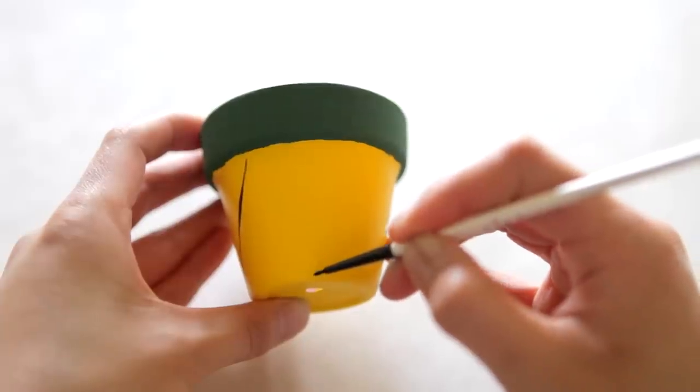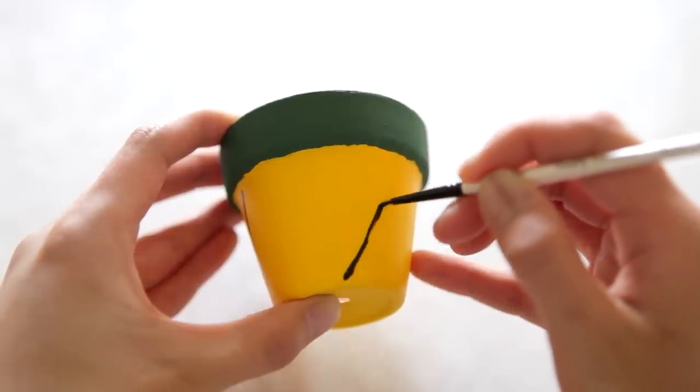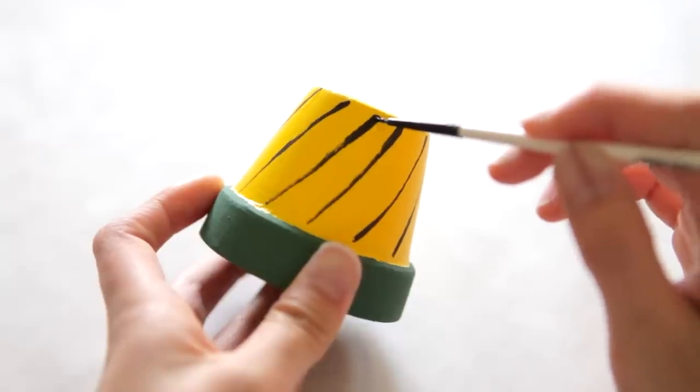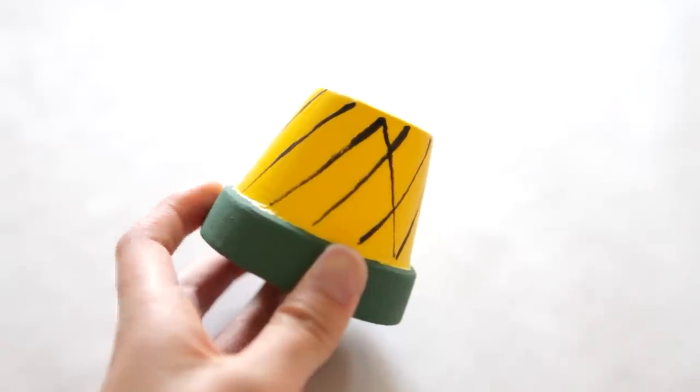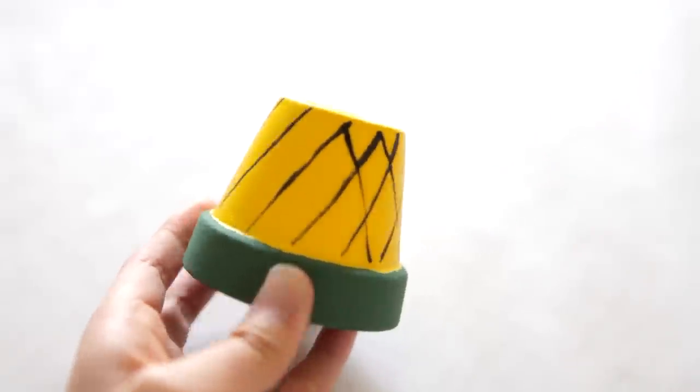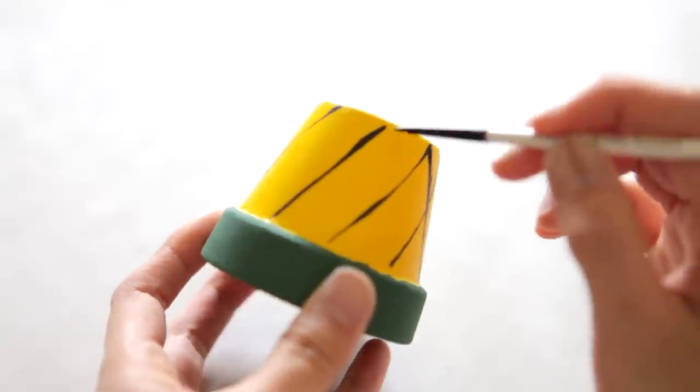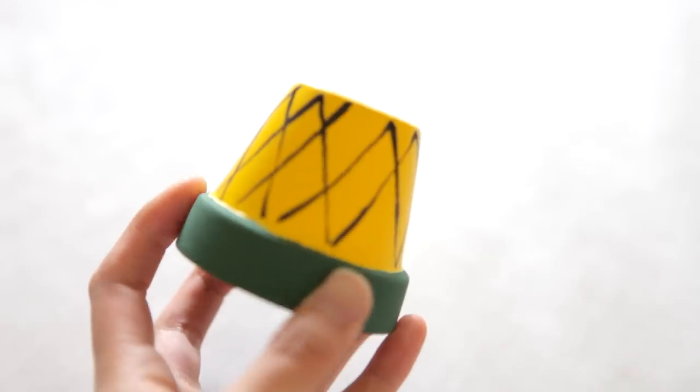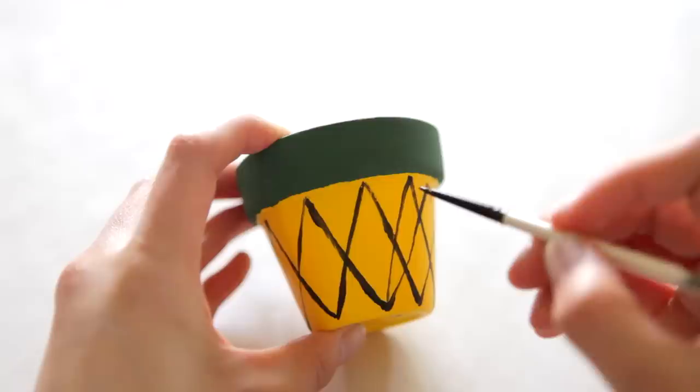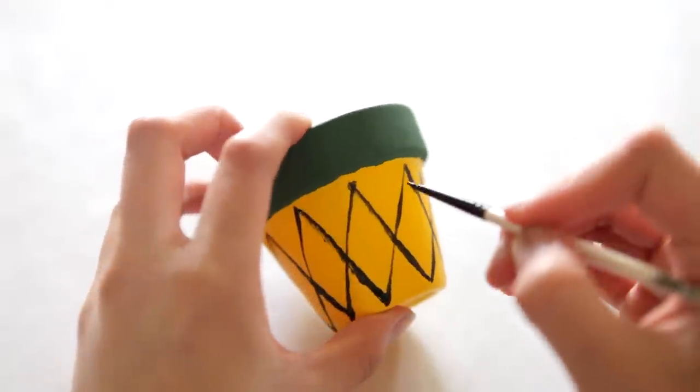For this one you're just going to hold the pot upright and starting from the bottom you're going to draw a diagonal line all the way up to the top. You're going to do this all the way around the pot. Then you're just going to flip the pot over and continue drawing diagonal lines while connecting them along the way. If you look at it they're really just V shapes all the way around the pot. Once you are done all the line drawing you can go ahead and start dotting all the empty spaces for the finishing details of our pineapple.